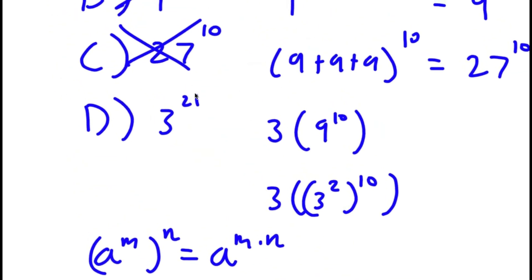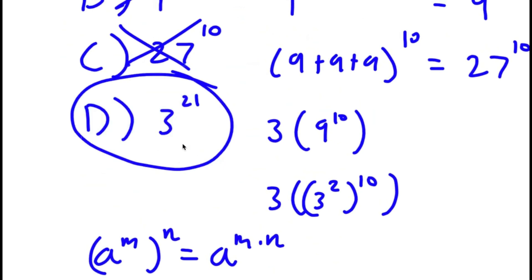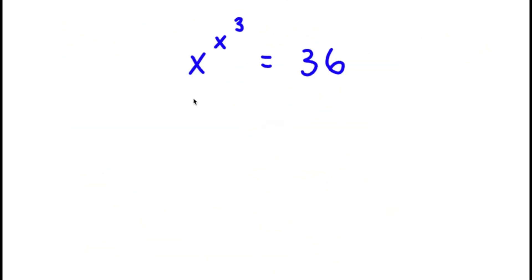This is actually the correct way of solving this problem, so the right answer is D. In the next problem, I have x to the power of x to the power of 3 is equal to 36, and I want to find the value of x.